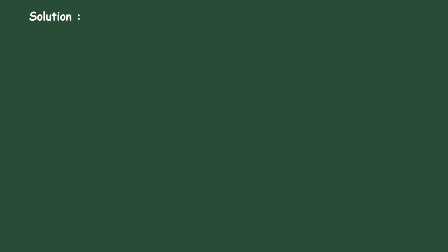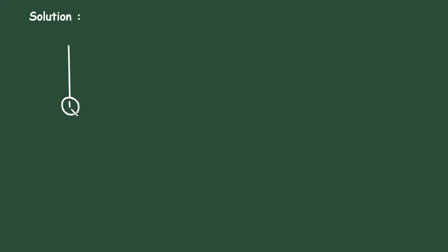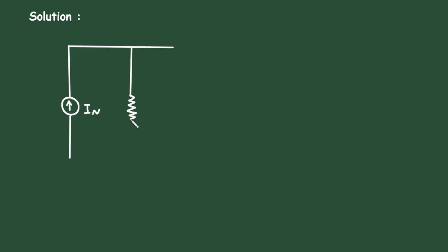Solution. First of all, let's see what Norton's theorem is. Norton's theorem states that a linear two-terminal circuit can be replaced by an equivalent circuit consisting of a current source In in parallel with a resistor Rn, where In is the short-circuit current at the terminals and Rn is the equivalent resistance at the terminals when all independent sources are turned off.